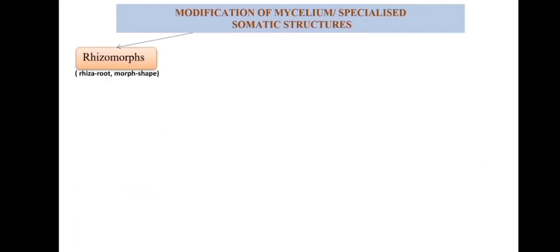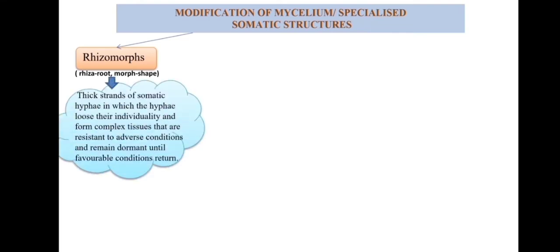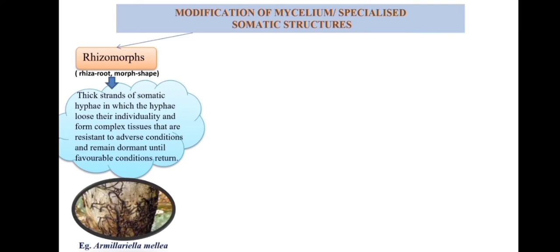The first specialized structure is rhizomorph. It comes from two words: rhizo meaning root, and morph meaning shape. So the name defines that it forms root-shaped structures. These rhizomorphs are dormant or resting structures formed to tolerate adverse environmental conditions. In this picture, you can see the fungus Armillaria mellea forming root-like structures over the plant surface.